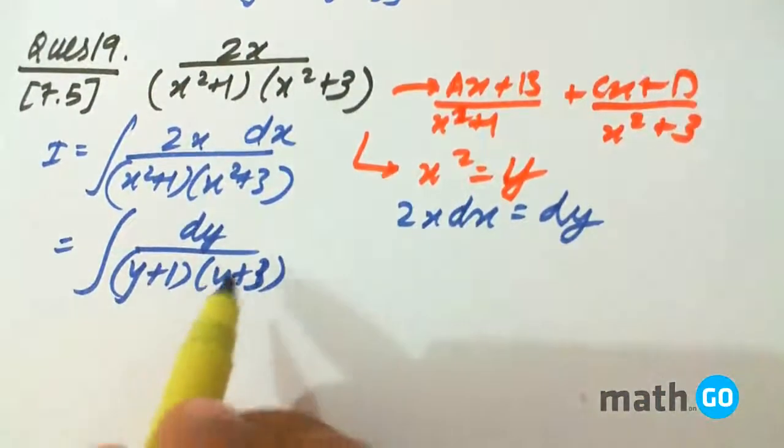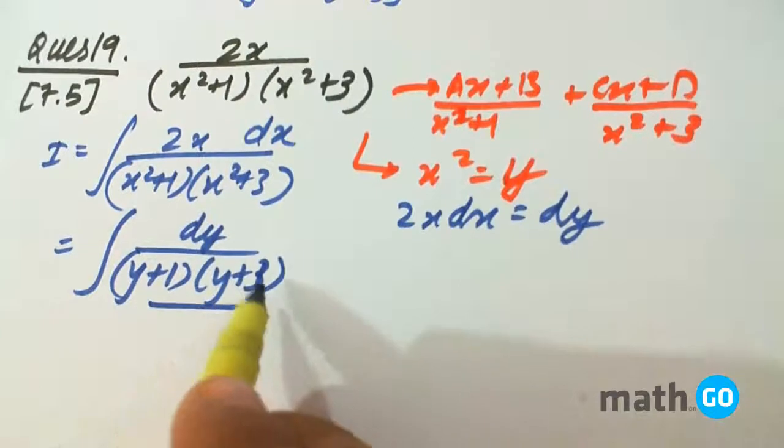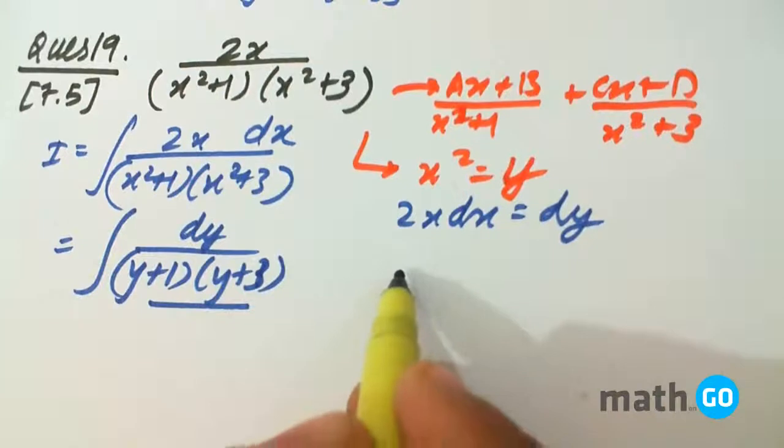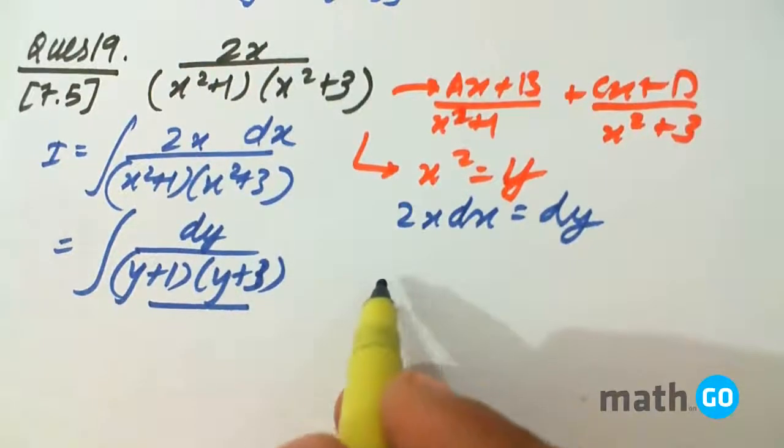Now this is the easiest question. Simple. Partial fractions have to be applied as we have done in earlier questions, like question number 3 or the earlier questions of this exercise.